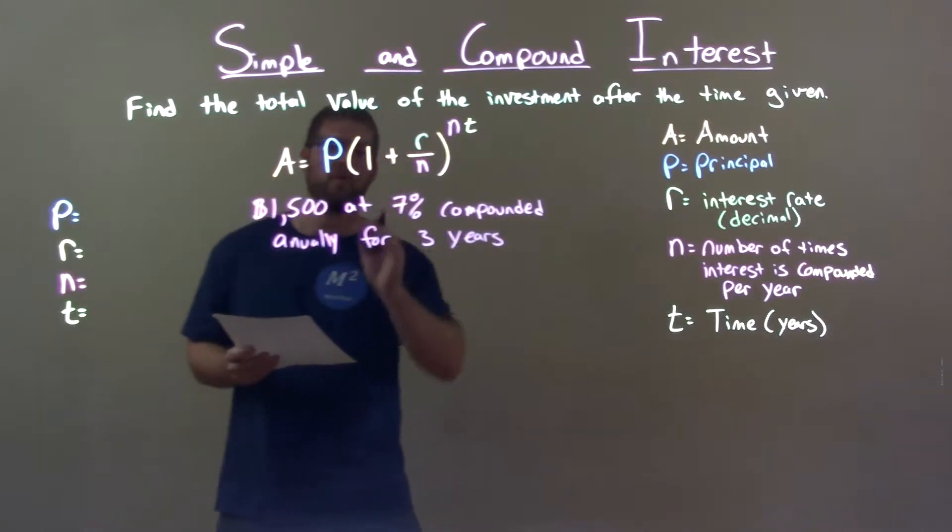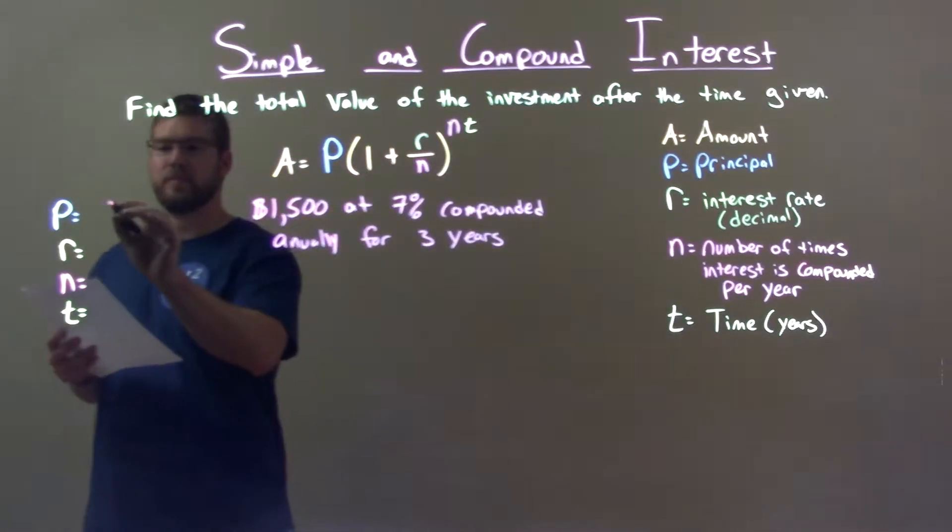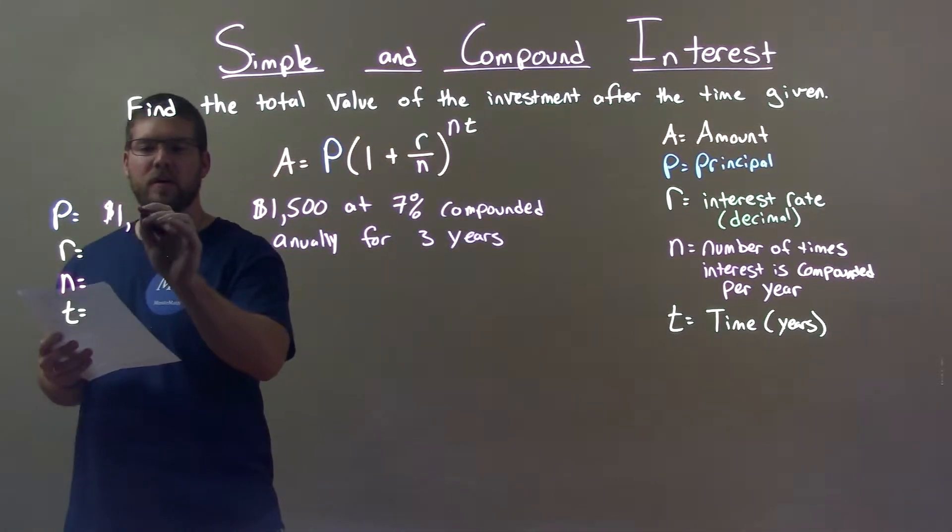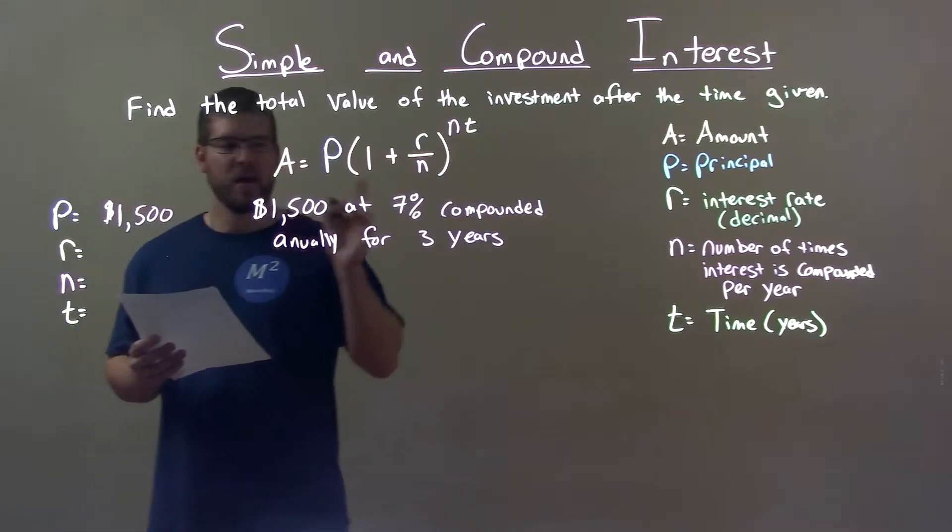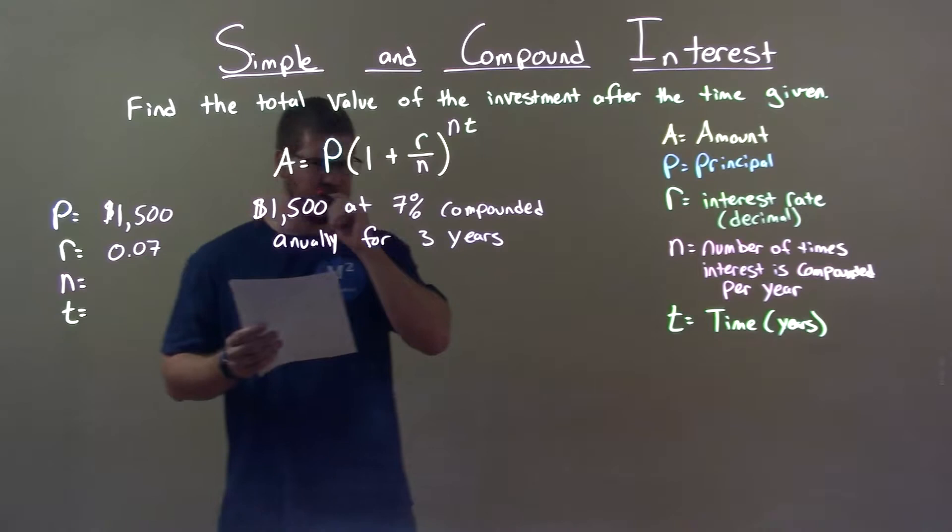All right, so first let's break this down to find our missing variables. Our principal, $1,500. Interest rate 7%, 0.07, so we're converting percent to decimal.